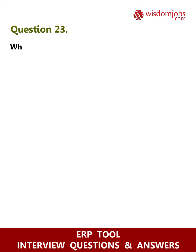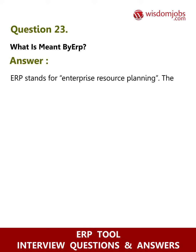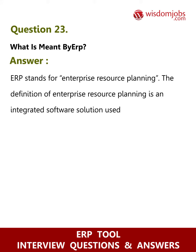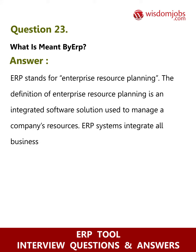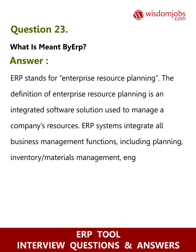Question 23: What is meant by ERP? Answer: ERP stands for Enterprise Resource Planning. It is an integrated software solution used to manage a company's resources. ERP systems integrate all business management functions including planning, inventory, materials management, engineering, order processing, manufacturing, and purchasing.